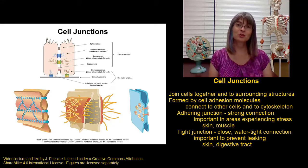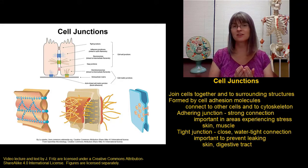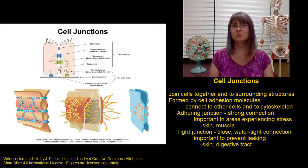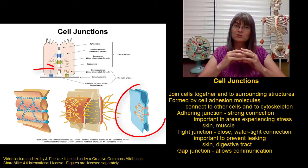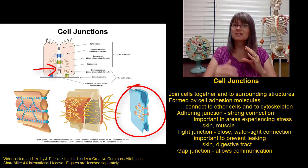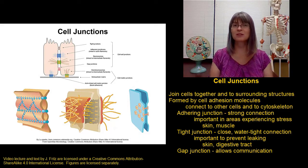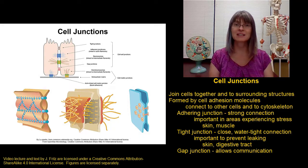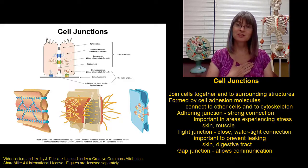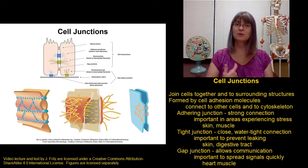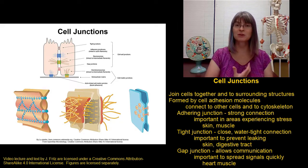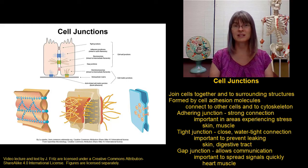The last type of junction is less about holding two cells together and more about allowing communication between two cells. This last type of junction is called a gap junction. A gap junction opens a sort of tunnel between two cells so that signals can pass directly between the two cells without having to go outside into the rest of the environment. We find gap junctions in the muscle cells of the heart so that a signal to contract can spread quickly between the various cells of the cardiac muscle so that we get a nice coordinated contraction.